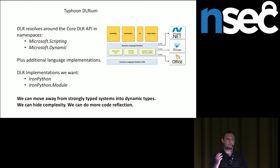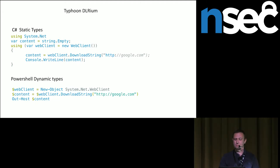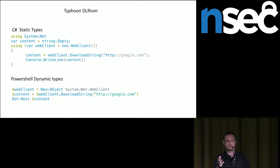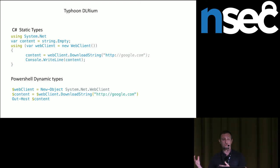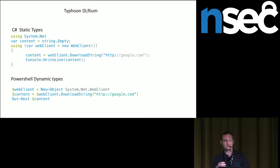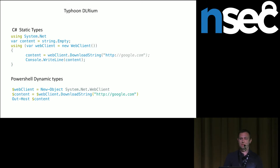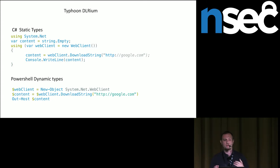In C# with static types, a very common scenario: you need to get something from the internet — a payload or whatever the case may be. In this example, you're getting the content of google.com in C#. PowerShell is a little more dynamic, so it can create a .NET object that's not strongly typed and get exactly the same thing with less pain, no compilation, and good things. But PowerShell is logged. Python is good for offense because it has a lot of facilities used over the years.